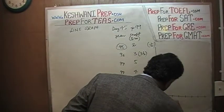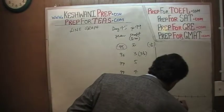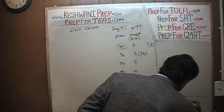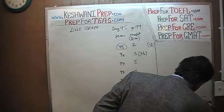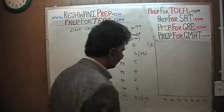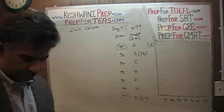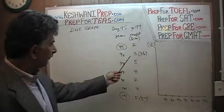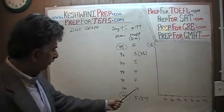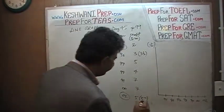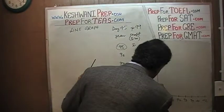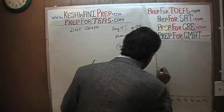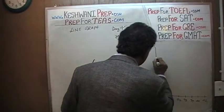So on the x-axis: 95, 96, 97, 98, 99, 2000, and 2001. And on the y-axis it goes all the way from 1, 2, 3, 4, 5, 6, and 7.